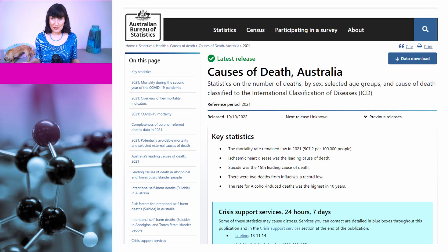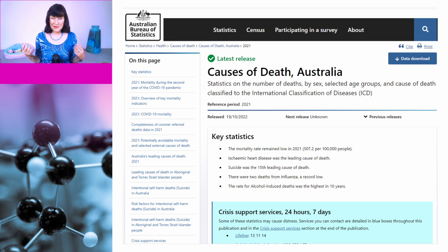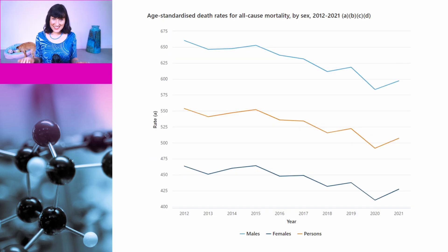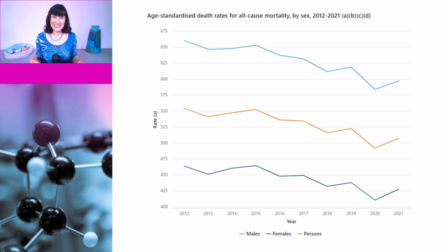Australia has recently released two reports looking at mortality: a fairly detailed analysis of the causes of death in Australia in 2021 — the year most people in Australia were vaccinated for COVID-19 — and the provisional mortality analysis for June 2022. This figure shows the age-standardised death rates for all-cause mortality by sex from 2012 to 2021. The rates are generally trending down, but there was a substantial dip in mortality in 2020, because the measures put in place to mitigate COVID also resulted in a decrease in most other types of death as well. This is consistent with what we discussed about infections increasing deaths from other causes.